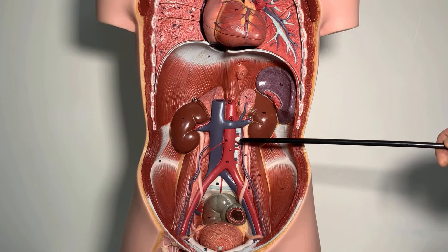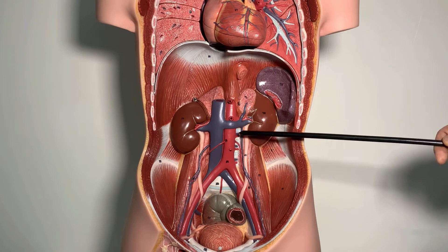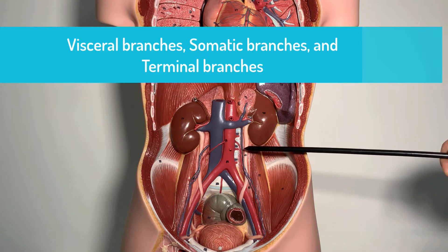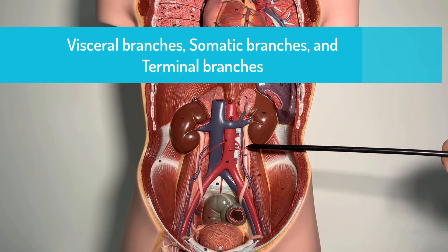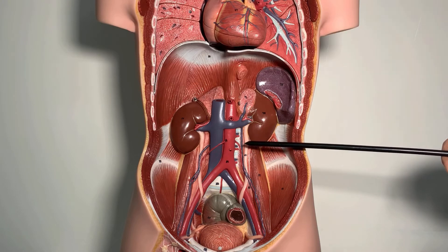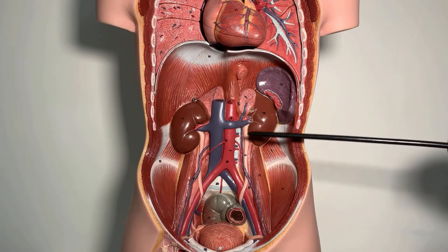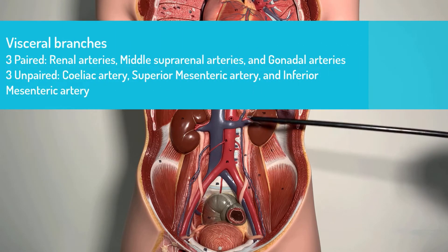For the purpose of simplicity, we have divided the branches into three categories: visceral branches, somatic branches, and terminal branches. We'll go through them one by one, starting with the visceral branches.